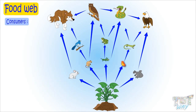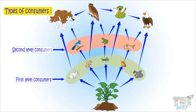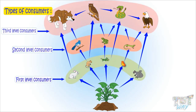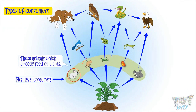A food chain can have three to four consumers. Consumers are further classified into three types: first level consumers, second level consumers, and third level consumers. First level consumers are those that directly feed on plants. Examples include rabbits, rats, grasshopper, butterflies, and squirrels.